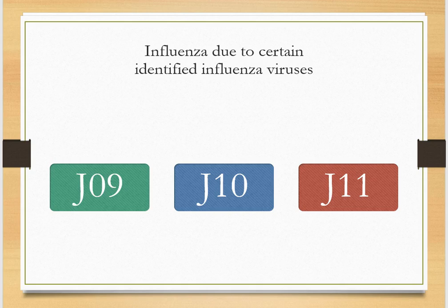Note the difference between J-09, J-10, and J-11. A code from category J-09 or J-10 would not be assigned if the provider says probable, suspected, 'I think it is,' or 'it could be' — in those uncertain cases, J-11 is the appropriate code.